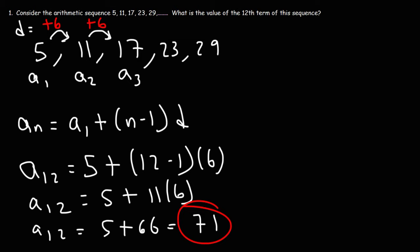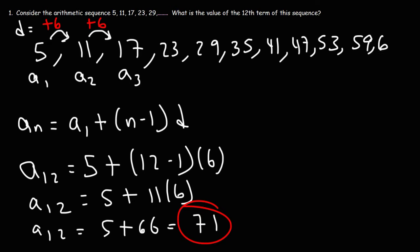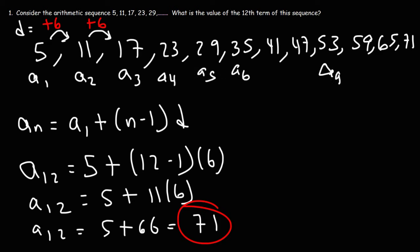Now we could check our answer to make sure that we have the right answer. If we were to continue the sequence, the next number will be 35. And then if we add 6 to that, it's going to be 41. Then 47, 53, 59, 65, and then 71. So this would be the 4th term, the 5th term, the 6th term. This is the 9th term. And the last one is the 12th term, if you count it.